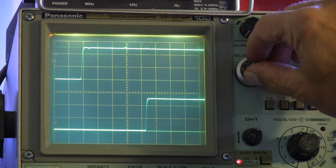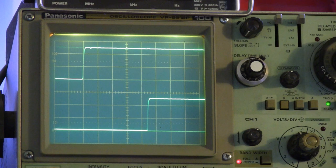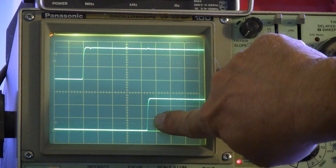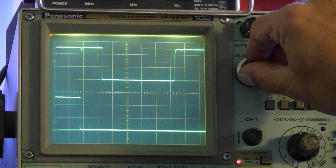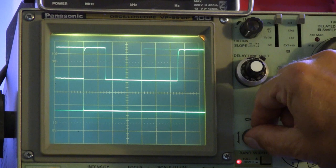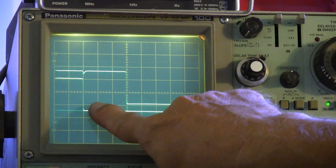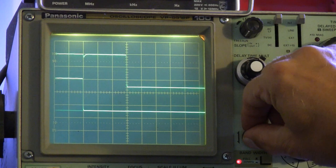And we are looking at one microsecond per division. We can measure one, two, three, four, and about a third, four and a third microseconds from this rising edge to this rising edge. Or we can look at the front porch. We can move this up so that our front porch is on the line with the fine divisions. And then we bring our other trace down and we can expand. Now we're looking at half a microsecond per division. And we can look at that and it's one and a half microseconds front porch.